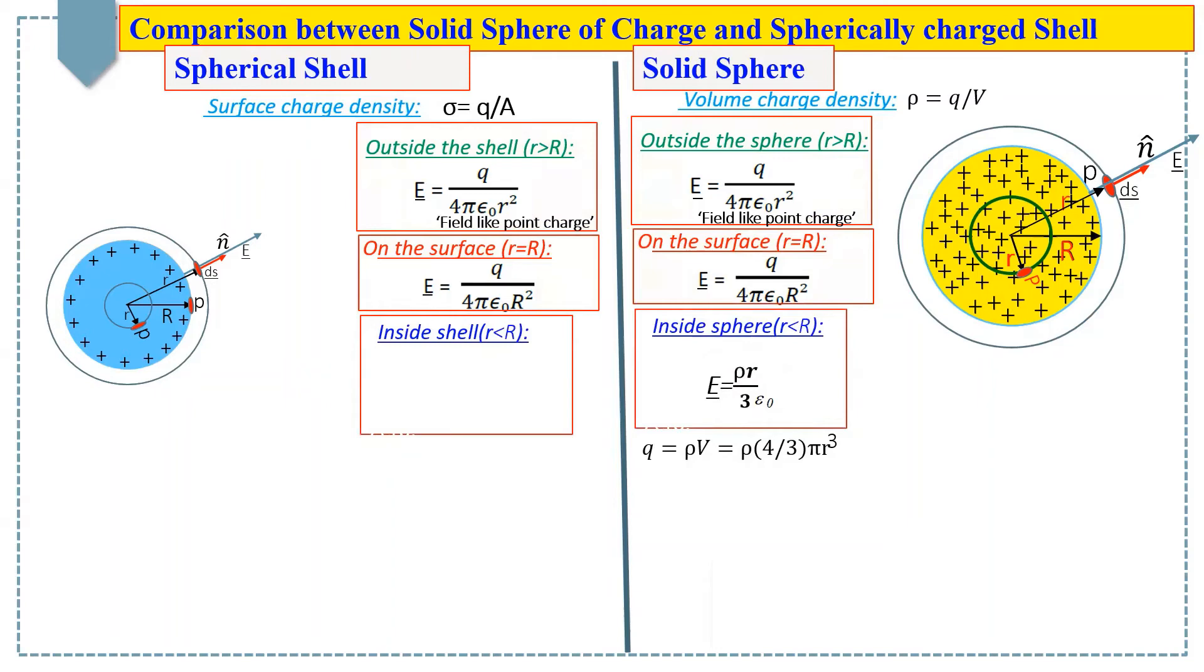Now, in the case of shell, a Gaussian inside the shell contains no charge because all charges are on the surface of the shell. Hence, we get immediately from Gauss's law that electric field everywhere inside the shell is zero.